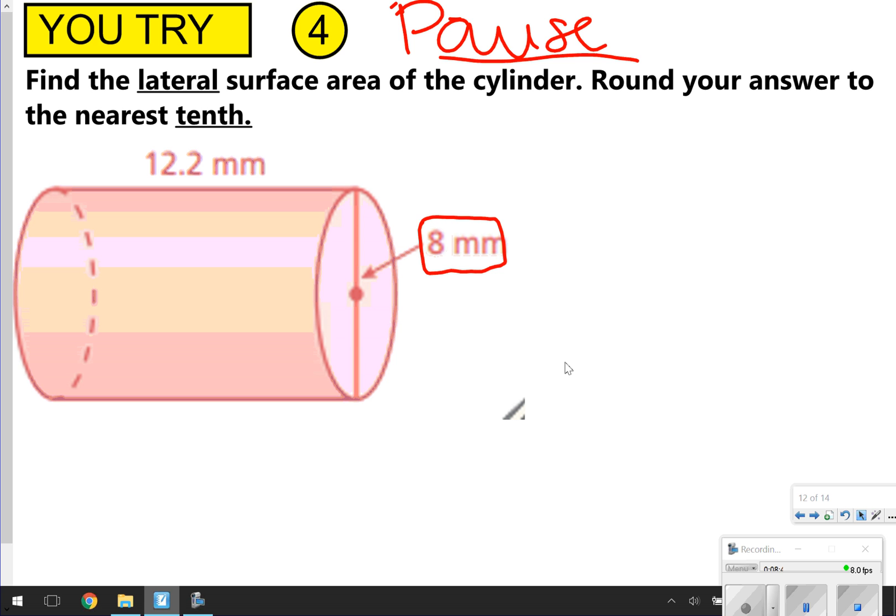Okay, so once again, the lateral surface area, we're only using 2πrh. That means I'm going to do 2 times π. Radius is not 8. 8 is actually the diameter. The radius will be half of that, so that will be the number 4. And then height will be 12.2.